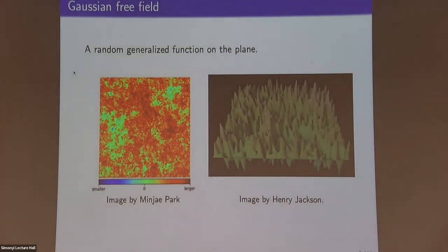To define LQG, we need to first understand the Gaussian free field. This is a random generalized function on the plane — more precisely, an element of a negative Sobolev space. On the left, you have a heat chart where places where the field is very red take very large positive values, and where it is green, very large negative values. On the right, we plot this graph of the GFF, which does not admit pointwise values — you have to integrate against some smooth function. Both figures show a very fractal kind of geometry.